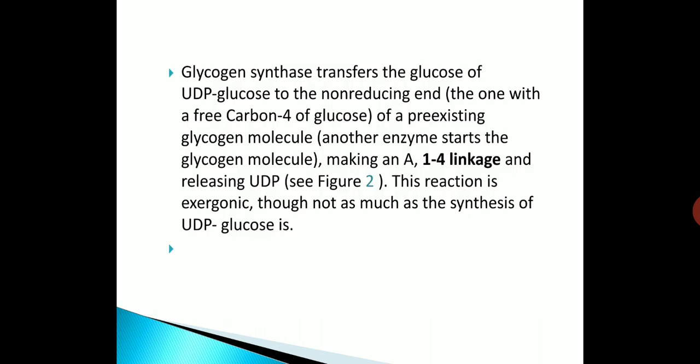Glycogen synthase transfers the glucose of UDP-glucose to the non-reducing end — the one with a free carbon 4 — of a pre-existing glycogen molecule. Another enzyme starts the glycogen molecule making an A1-4 linkage and releasing UDP. This reaction is exergonic, though not as much as the synthesis of UDP-glucose.